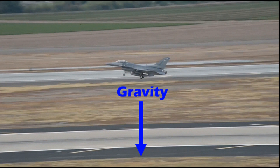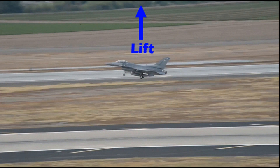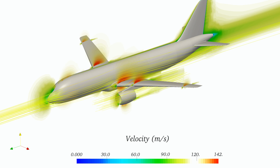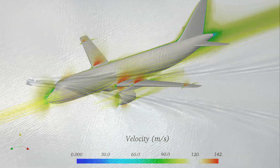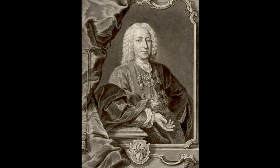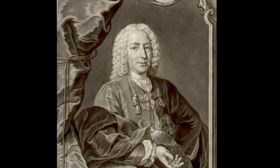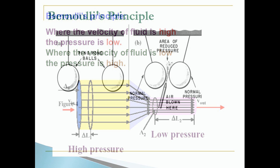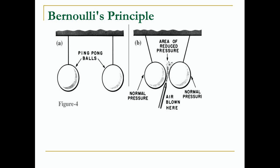While gravity pulls planes down to the ground, the force that works against gravity is lift. Lift opposes gravity and keeps planes in the air. Since air has mass, objects moving through it behave the same as objects moving through any fluid. In the 18th century, Swiss physicist Daniel Bernoulli discovered that as fluids, including air, increased in velocity, their pressures decreased. This relationship between velocity and pressure is the foundation for the shape of airplane wings.